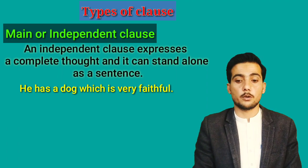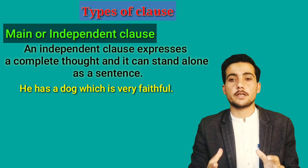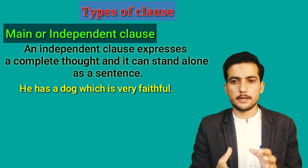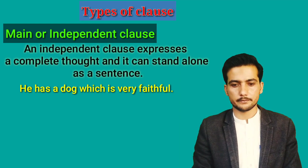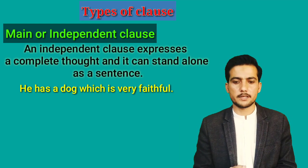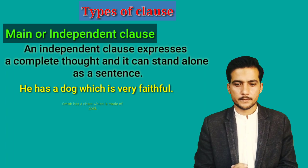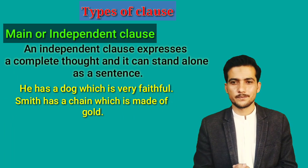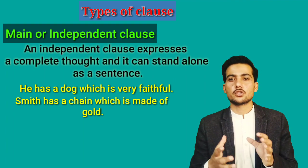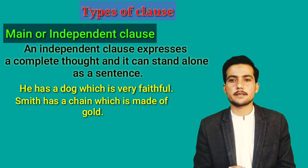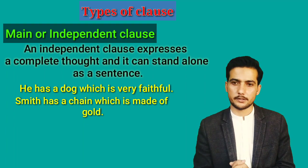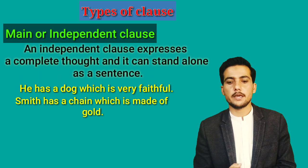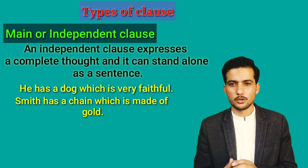The second part, 'which is very playful,' is the dependent clause because 'which' cannot stand alone as a sentence. Another example: 'Smith has a chain which is made of gold.' Here, 'Smith has a chain' is the main or independent clause because it can stand alone as a sentence.